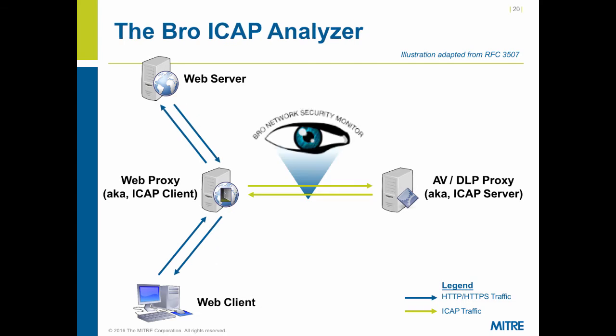How does BRO fit into all of this? The BRO ICAP analyzer is going to monitor that link between the web proxy and the content inspection device. That affects things like your IP addresses and port numbers — by monitoring that link, everything will have the IP addresses of the web proxy and the other device, not necessarily the original client and original server. So there are a few things we have to account for.